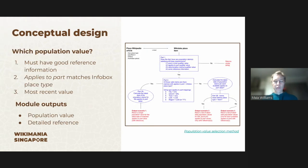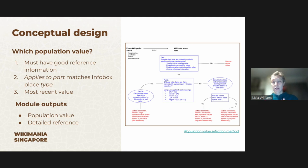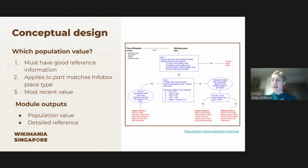Most of the work I was involved in was designing how we are going to choose which population value is the best one for any given article. We decided on some criteria that had to be met: mainly we needed to have good reference information so that we could reference the value we were using. We also needed to check that the population value we were selecting had a geographic area that matched what was being described in the Wikipedia article — for example, you don't want to use a suburb population value if you're describing a city. And of course we wanted to get the most recent value. The module then crunches these criteria against these rules and gives as output the population value and the reference data back to the infobox templates.